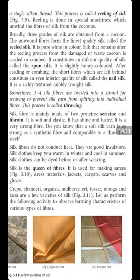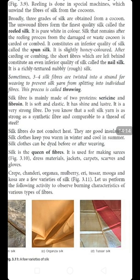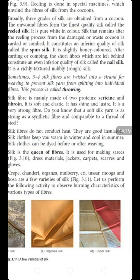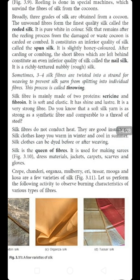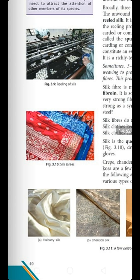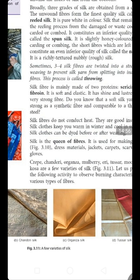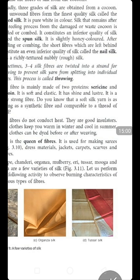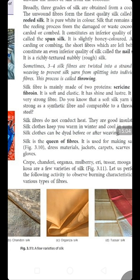Silk is called the queen of fibers. It is used for making sarees, dress materials, jackets, carpets, scarves, and gloves. The varieties of silk available in the market include crepe, chanderi, organza, mulberry, and tussar silk; moonga and kosa are a few other varieties. Now let us perform an activity using these silks. The pictures show mulberry silk, chanderi silk, organza silk, and tussar silk. You have to observe the burning characteristics of various kinds of fibers.